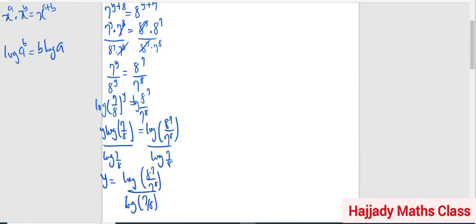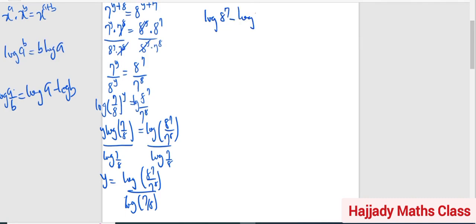So I'm going to use another law that says that log (a divided by b) is the same thing as log a minus log b. So with this, for the numerator I'm going to have log 8 raised to the power 7 minus log 7 raised to the power 8. Also for the denominator, the same rule will be applied, so I'm going to have log 7 minus log 8.